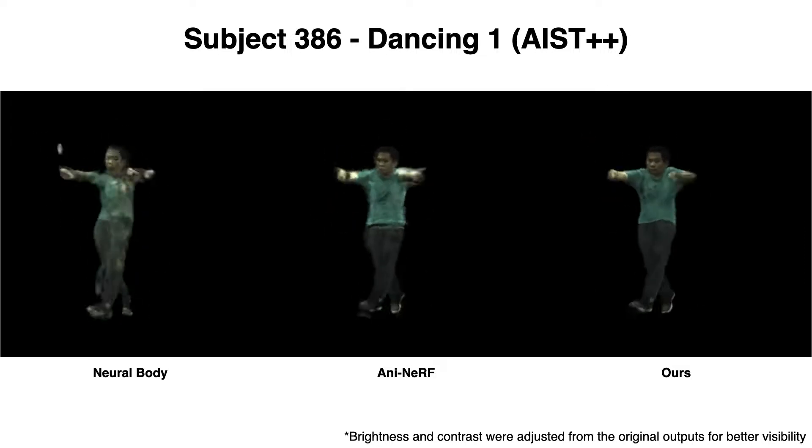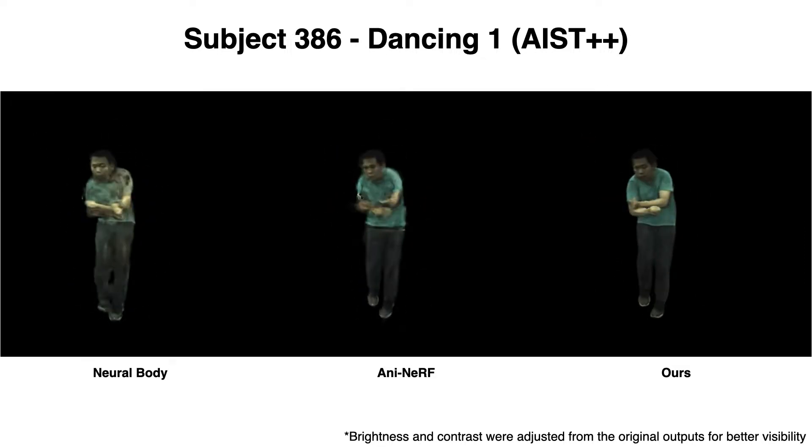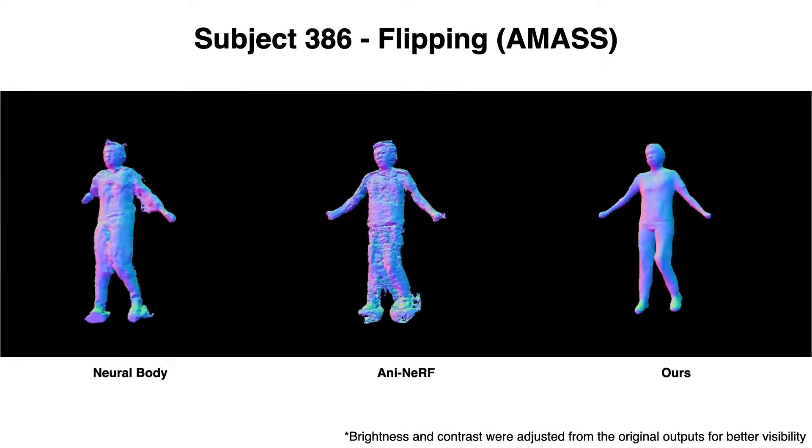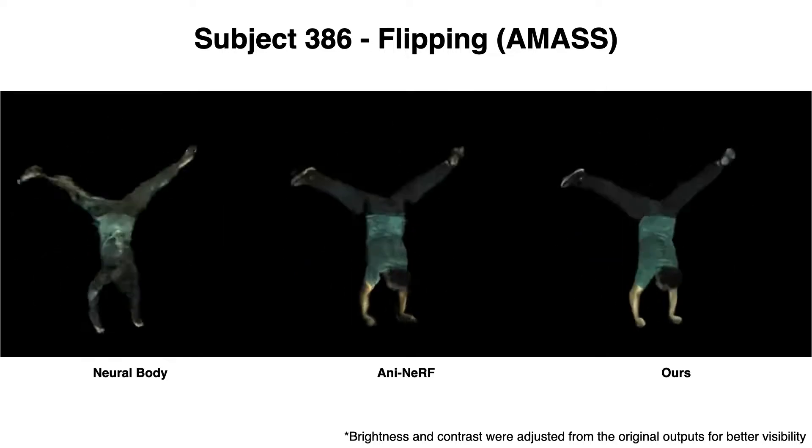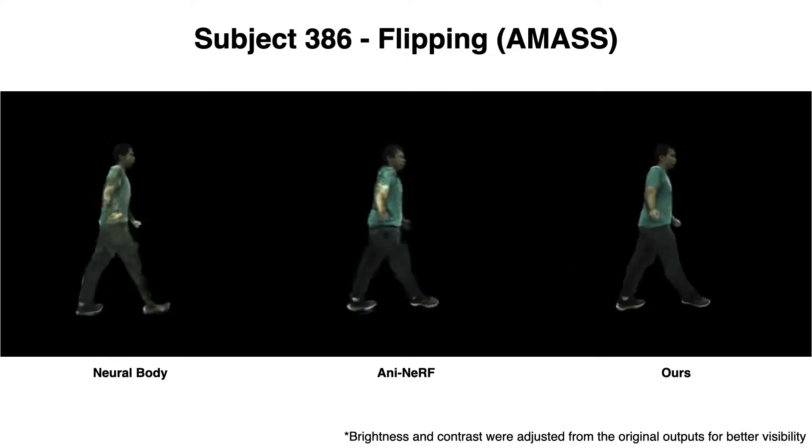Animatable Nerf uses a learned neural network to predict mappings from observation space to canonical space. This network does not generalize well and produces noisy results on out-of-distribution poses.